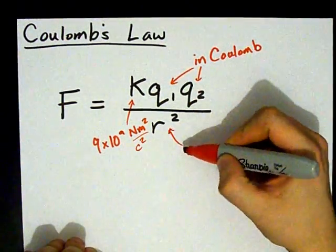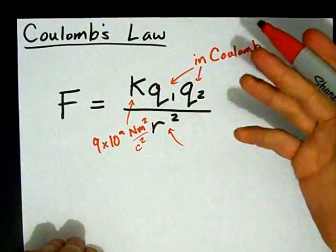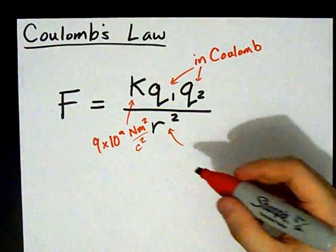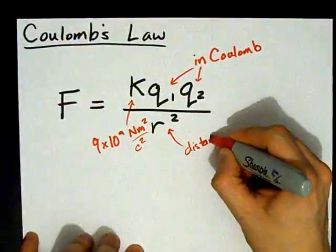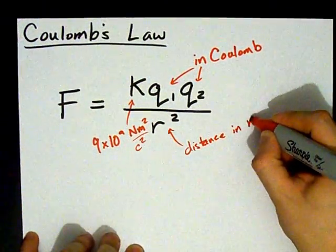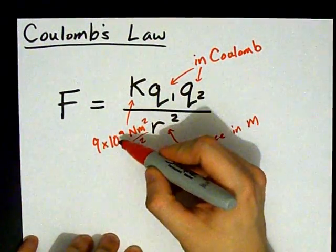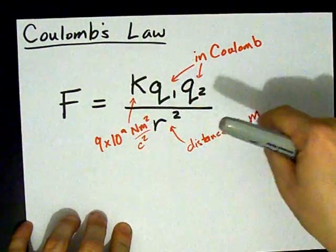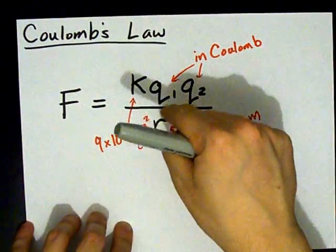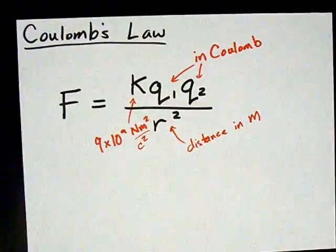Same reason R, the gas constant, is like liters, atmospheres per mole Kelvin or whatever. And R is the distance between the two particles, and it has to be in meters if you're going to use nine times ten to the power of nine. Those meters squared are going to cancel with this meter squared. Note that the R here is squared.